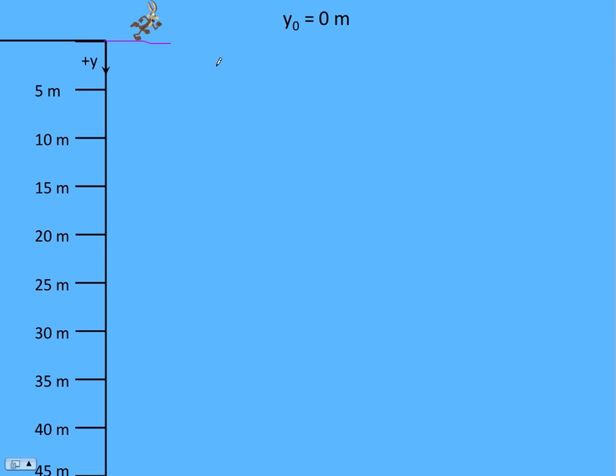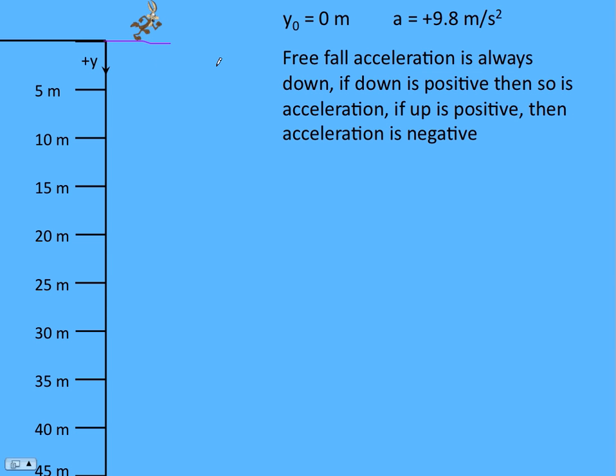Let's assign our variables. He's starting at the origin, so the initial Y position is 0. And the acceleration, he's on earth, so it's 9.8 meters per second per second. Notice I put a positive there to emphasize that free fall acceleration is always down. Don't worry about whether it's positive or negative. It's always down. Since I made down positive, that means the acceleration is positive. If I were to make up positive, the book will do that sometimes, and so will I, then we would have a negative acceleration. It's always down, and your coordinate system tells you whether it's positive or negative.